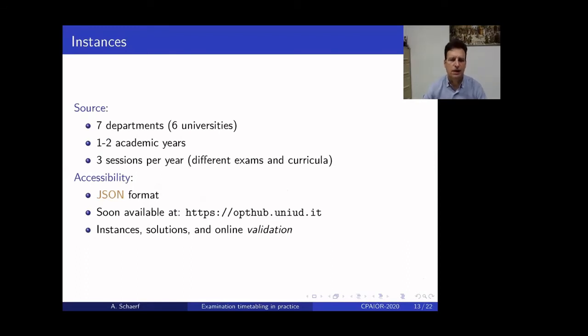Okay. So, we collected the instances. So, we collected seven departments that belong to six universities. We already, we collected for one or two academic years and three sessions per year. Files are in JSON format and also in MiniZinc format, as I said. And they will be soon available on our repository, which is at this link. The repository normally has instances, solutions, and online validator, and we will put everything there.